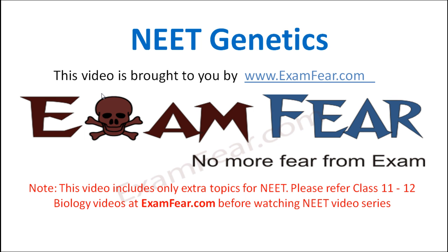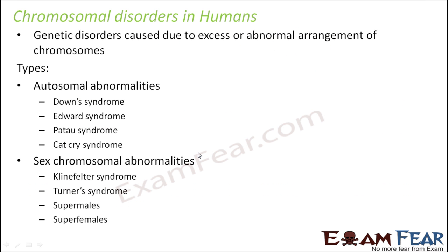Hello friends. This video on genetics is brought to you by examfear.com — no more fear from exam. Chromosomal disorders in humans: the name itself defines itself. Chromosomal disorders means some abnormal arrangement in the chromosomes. So if some disorders happen due to excess or abnormal arrangement of chromosomes, those types of disorders are called chromosomal disorders in humans.